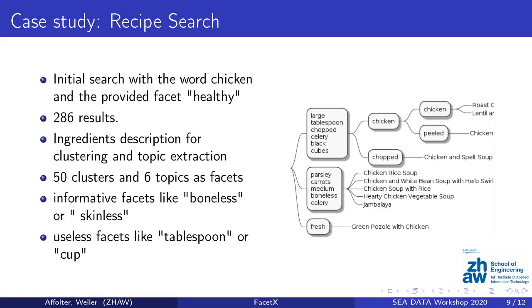The next case study was a recipe search on Epicurious. Epicurious provides many filter options to narrow down results, but we used 'chicken' as a search word and only activated the provider facet 'healthy', which gave us 286 results. For the clustering, we used the ingredient descriptions, and we made 50 clusters with six topics as facets. We had some good informative facets like 'boneless', 'skinless', or 'parsley' as an ingredient, but also some useless facets like 'tablespoon' or 'cup', which show up in almost every recipe's ingredient description.